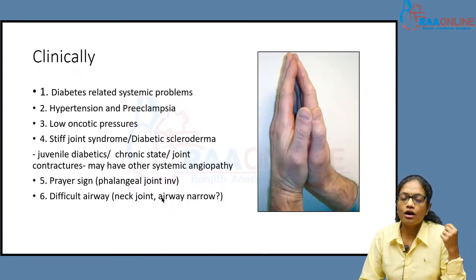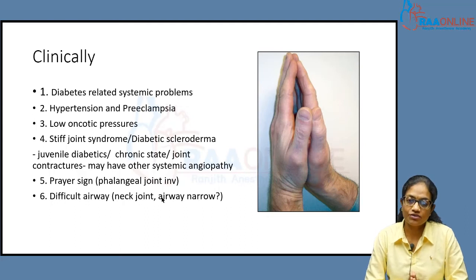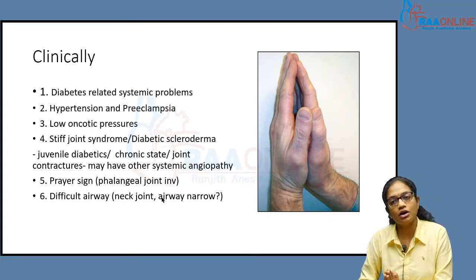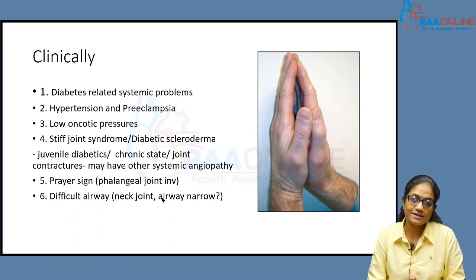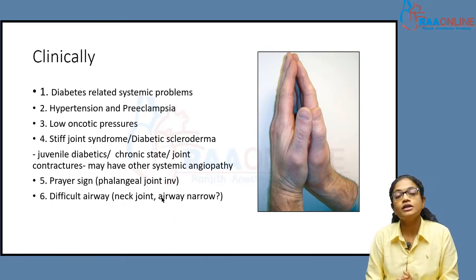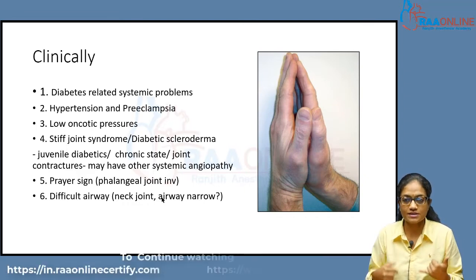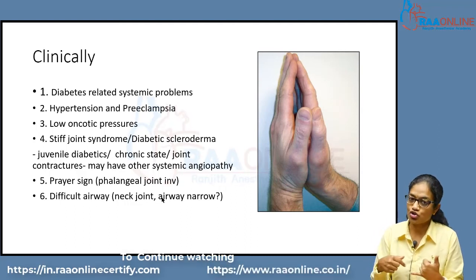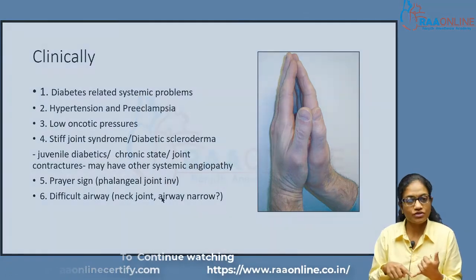Clinically, when this mother comes for antenatal assessment, you need to assess how to classify whether she is controlled or uncontrolled, and whether there are any anesthesia-related problems for regional or general anesthesia. First and foremost, assess for any systemic problems — macroangiopathy, microangiopathy — as every system can be involved. You need to take a thorough history and review symptoms related to every system.